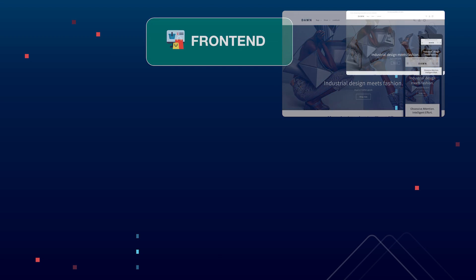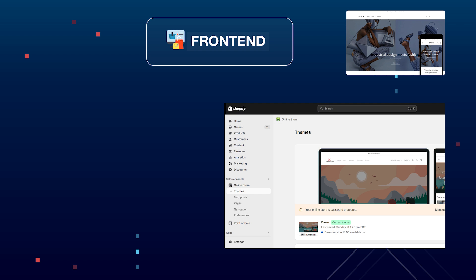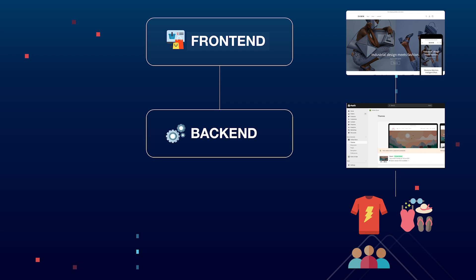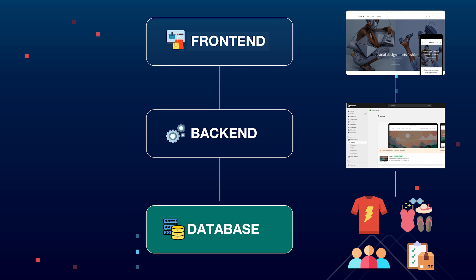Most of us are already familiar with how Shopify websites are structured. On the first layer, we have the storefront, where we showcase our products, also called the frontend. Then we have the admin area, where we can manage a store, like create new products or process incoming orders — that's the store's backend. All the data, like every product you create, every collection, every customer account, every incoming order, also needs to be stored somewhere. Behind the scenes, Shopify is operating some kind of database for us.